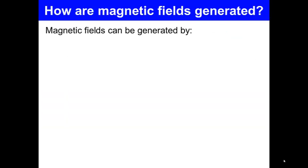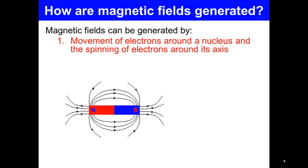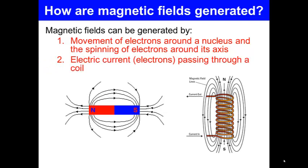Magnetic fields can be generated by the movement of electrons around a nucleus and the spinning of electrons around its axis. They can also be generated by an electric current, or electrons passing through a coil of wire — that's an electromagnet.